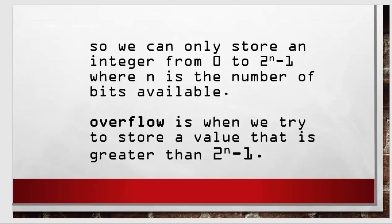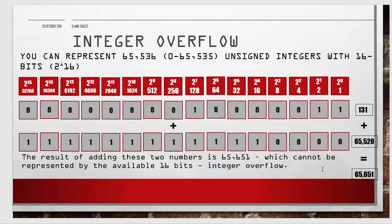Here's an example. We're adding 131, represented in binary as 128 plus 2 plus 1, to 65,520. That gives us 65,651, which is clearly bigger than this number.